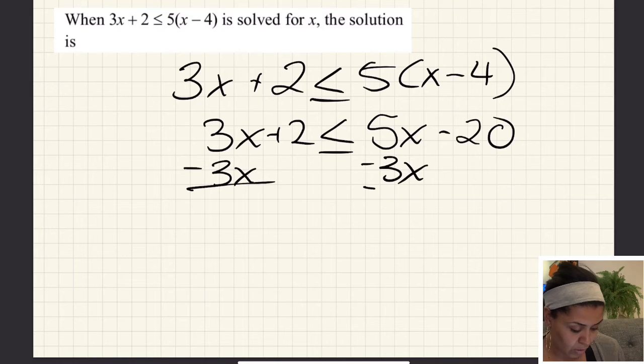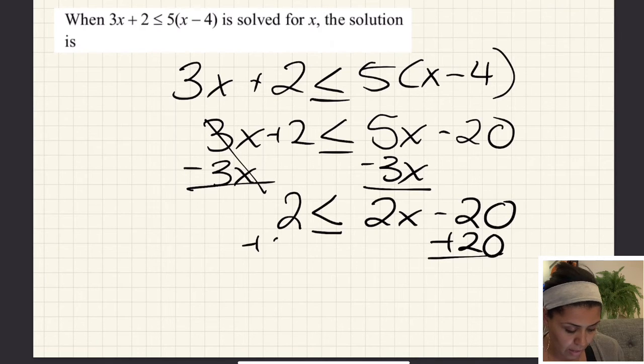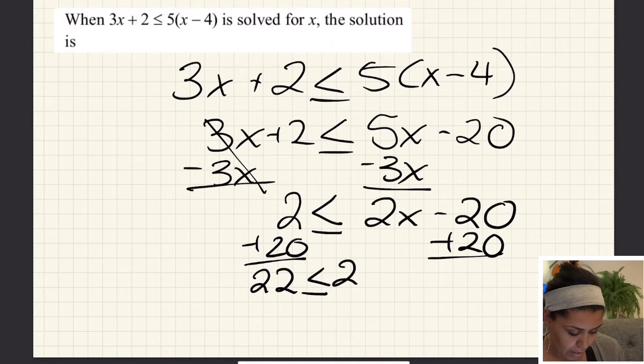So I end up with 2 ≤ 2x - 20. I'm going to add 20 to both sides, so I have 22 ≤ 2x. Divided by 2, that's 11 ≤ x.